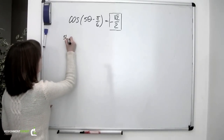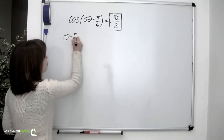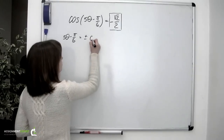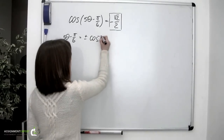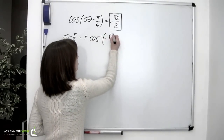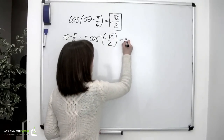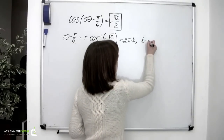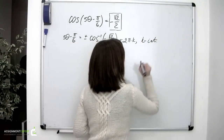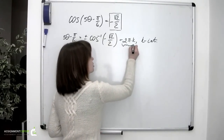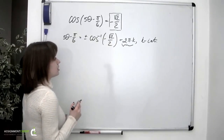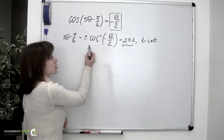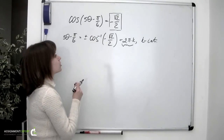So we have 5 theta minus pi over 6 equals positive or negative inverse cosine of negative square root of 2 over 2, plus 2 pi k, where k is an integer. This plus 2 pi k means we are going to have two solutions for each period, which equals 2 pi, because the cosine function is periodic with period 2 pi.